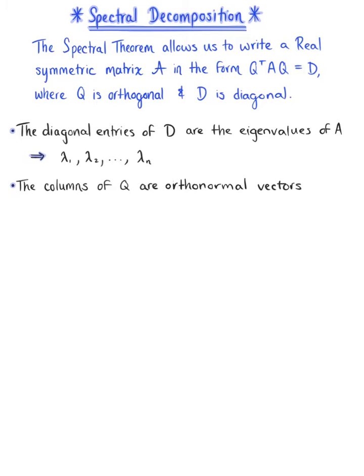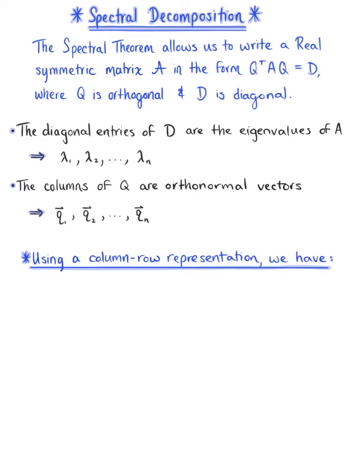The columns of matrix Q are the orthonormal vectors, vector Q sub 1 through vector Q sub n. Using a column row representation of the matrix multiplication, we can write matrix A as being equal to matrix Q times matrix D times the transpose of matrix Q.